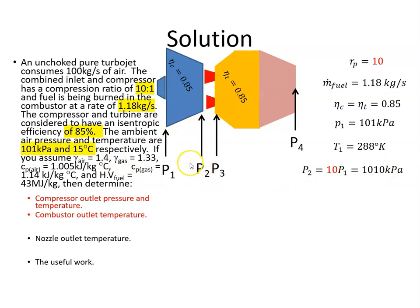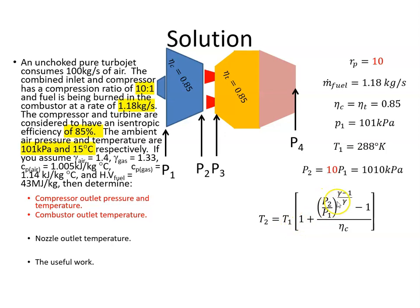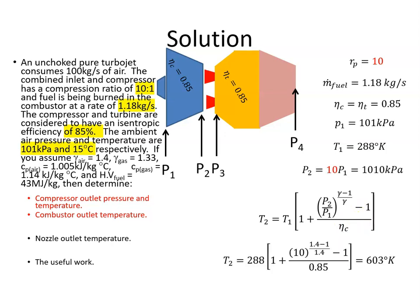Next we want to get the compressor outlet temperature at station 2. T2 is equal to T1 times 1 plus the pressure ratio to the power of (γ−1)/γ, minus 1, all over the isentropic efficiency of the compressor. When we plug in the values, we get T2 to be 603 Kelvin.